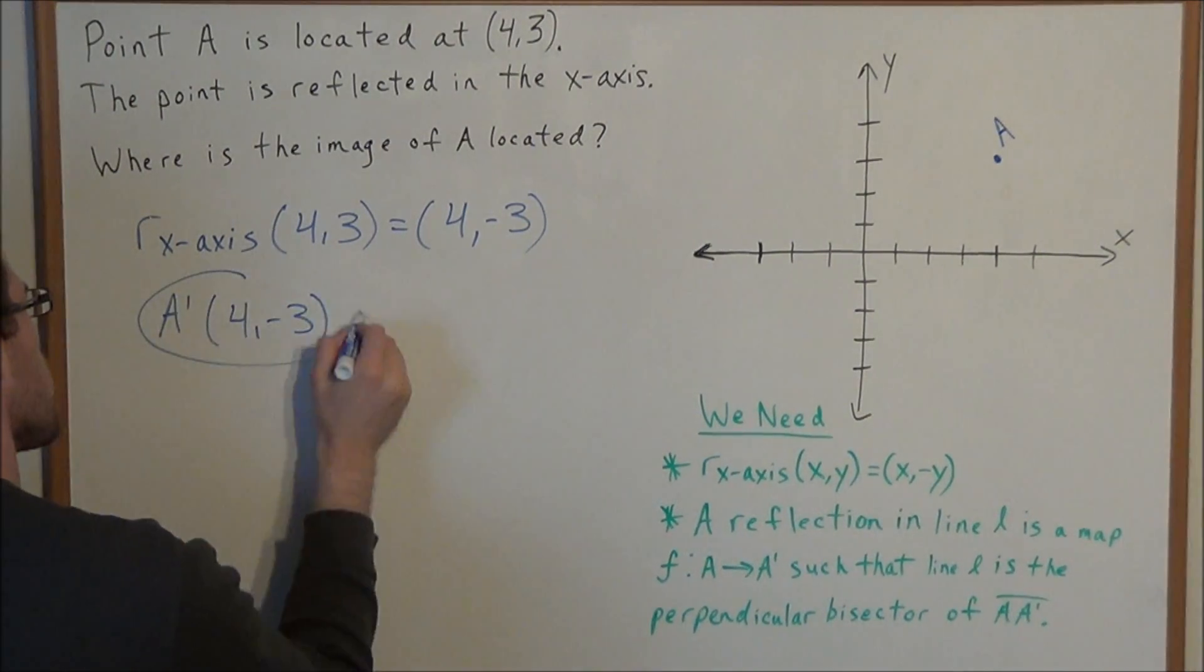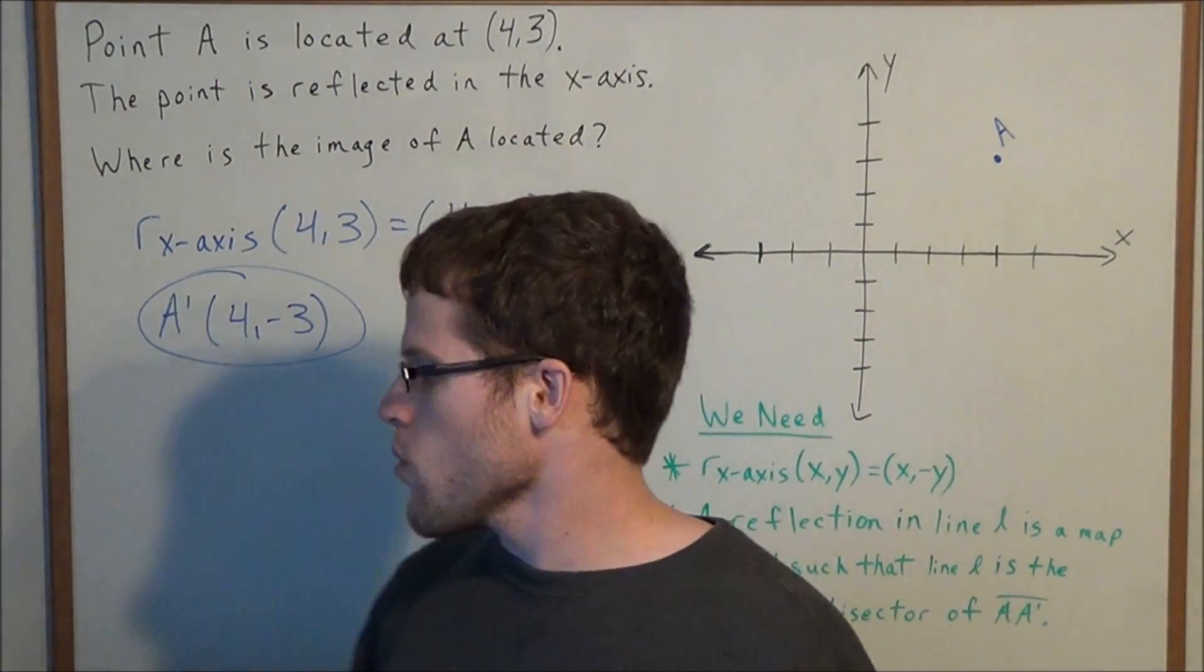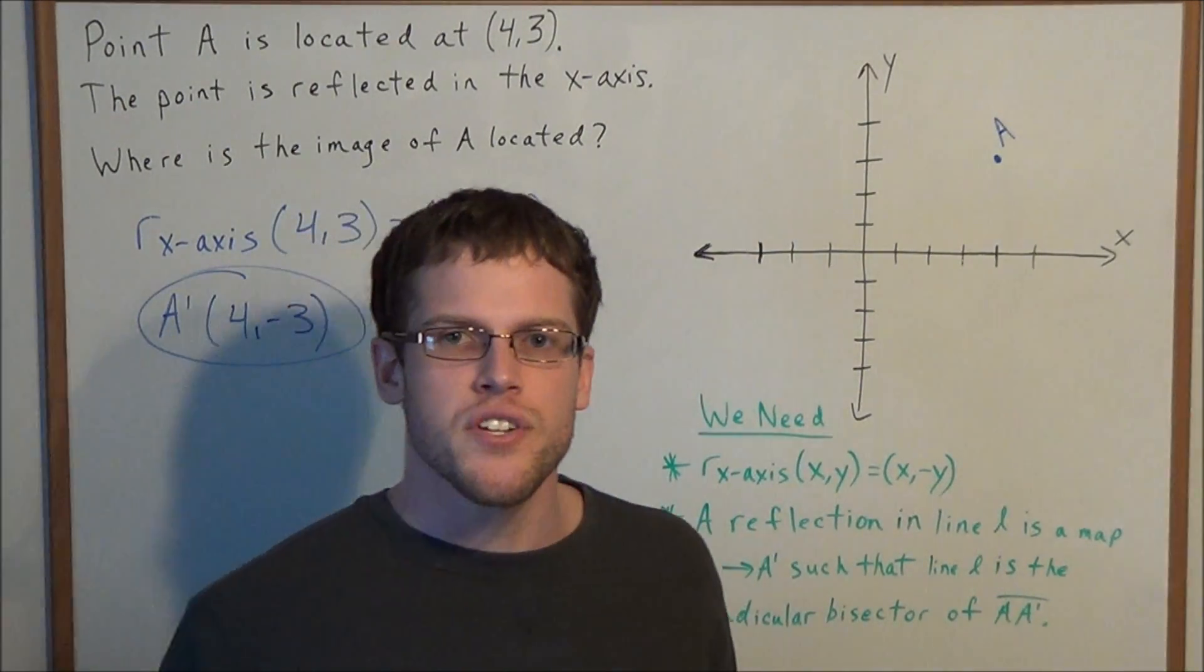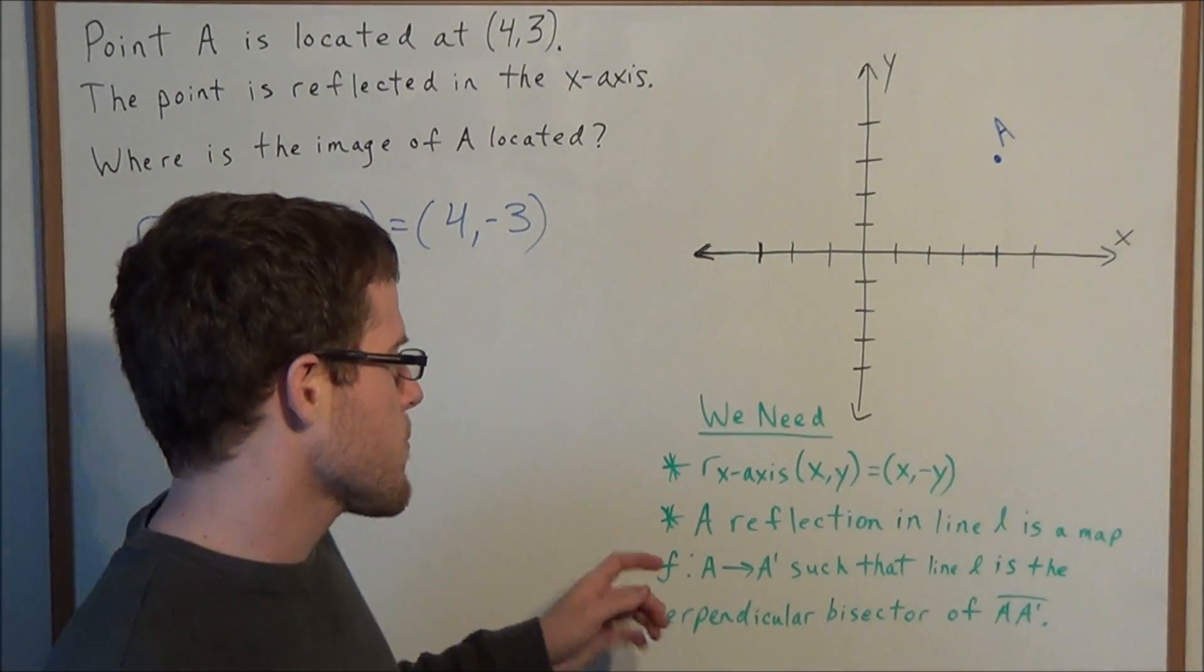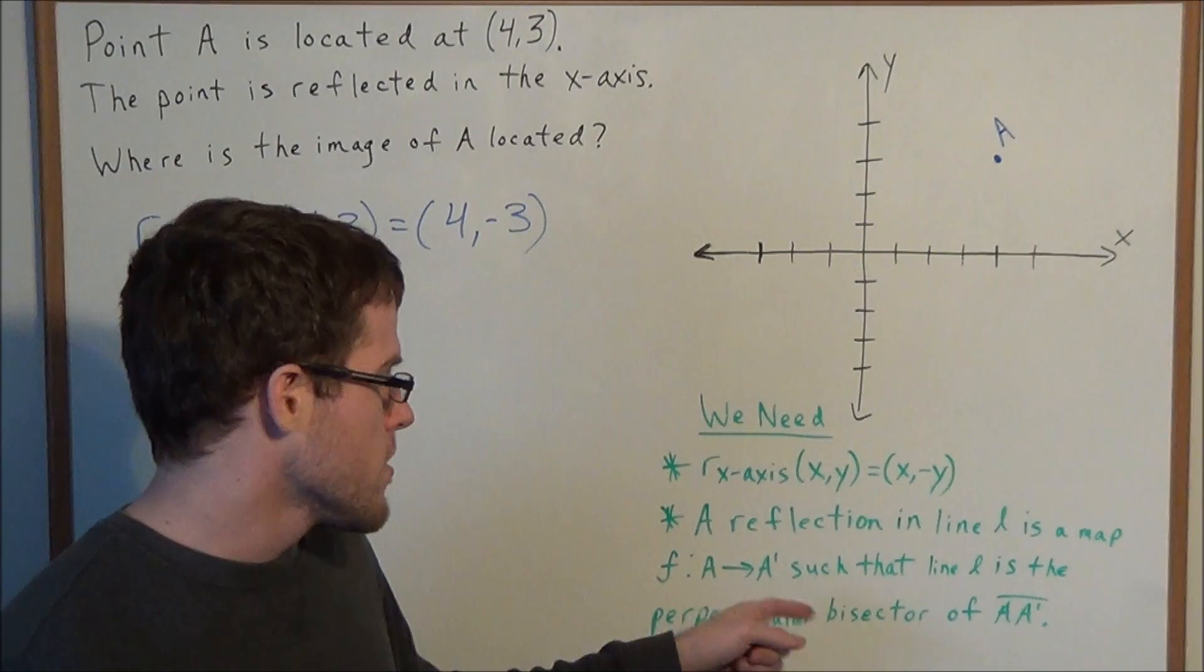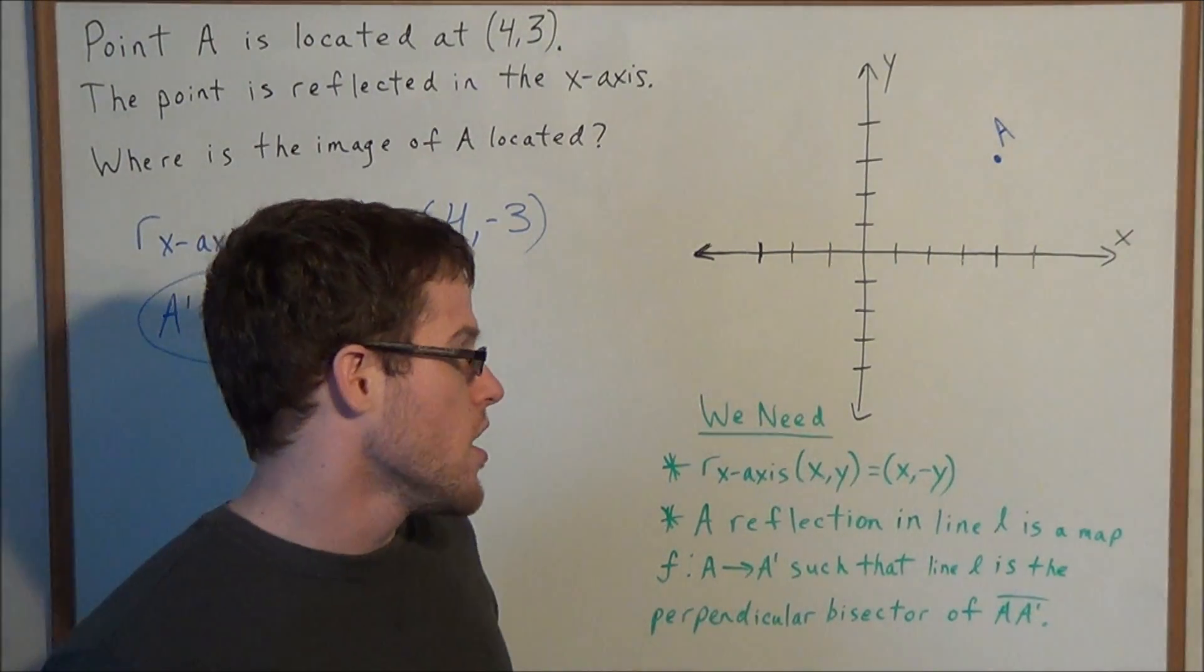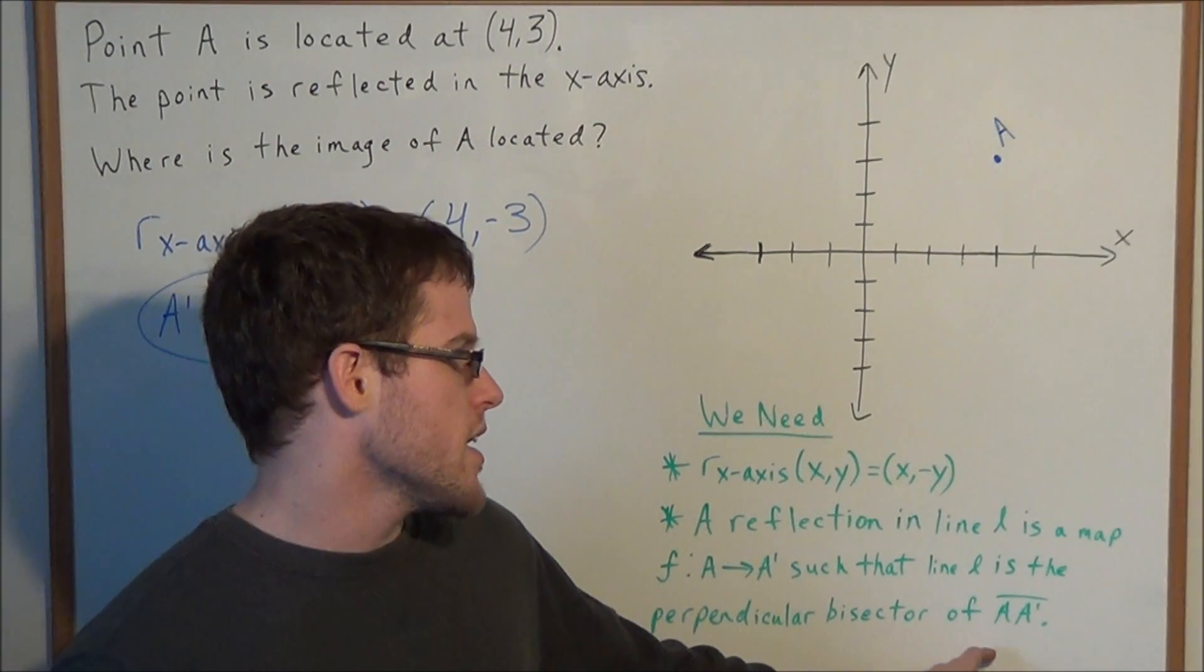So this is our answer, but it doesn't really say much about what a reflection is. I want to think about the definition of a reflection. A reflection in line L is a map from A to A prime, such that line L is the perpendicular bisector of line segment AA prime.